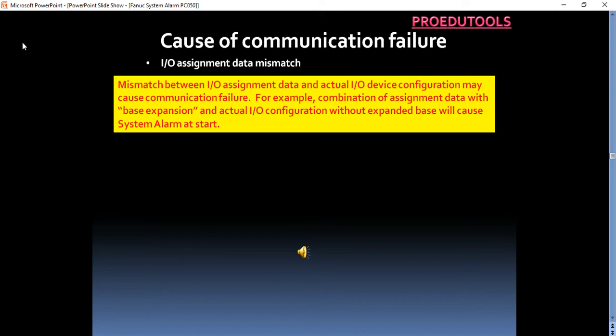IO assignment data mismatch. Mismatch between IO assignment data and actual IO device configuration may cause communication failure. For example, combination of assignment data with base expansion and actual IO configuration without expanded base will cause system alarm at start.